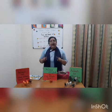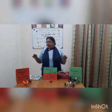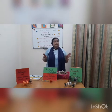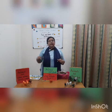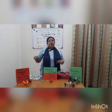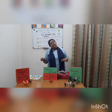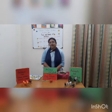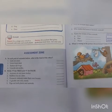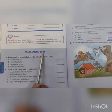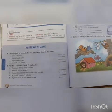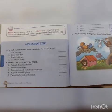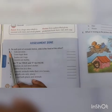Aaj hum kya karne wale hain? Aaj hum food of animals jo hamne padha hai — we were learning from the last three days — we are going to do the exercise in the book related to food. Joh animal ke food patterns related hamaari book mein exercise hai, aaj hum usse parhenge. So get ready for your book. We are going to do the assessment zone on page number 50, Lesson 6: Food and Homes of Animals.